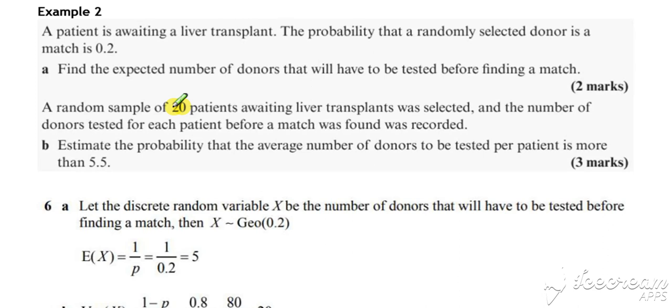These 20 values are taken from geometric distributions, so 20 is our n value, our sample size. That's going to be the n value we can use for the central limit theorem when estimating the probability.